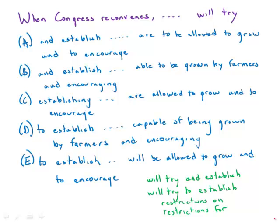This question is about the ambition of some new bucolic representatives. The first construction to address is 'we'll try and establish' versus 'we'll try to establish.' 'Try and' is often said in spoken English but is technically incorrect and always wrong on the GMAT. So we'll eliminate any answer choices that contain 'try and,' keeping only those with 'try to.'